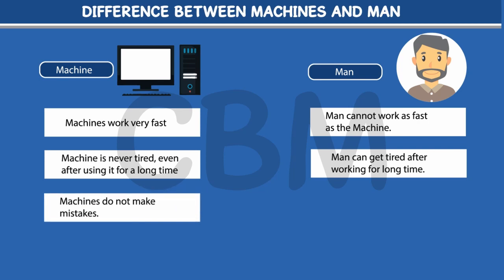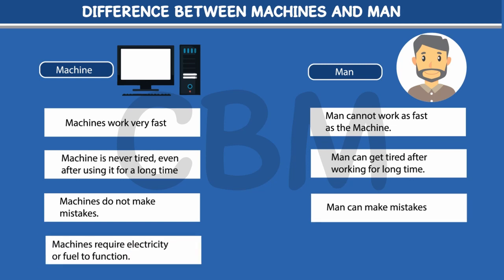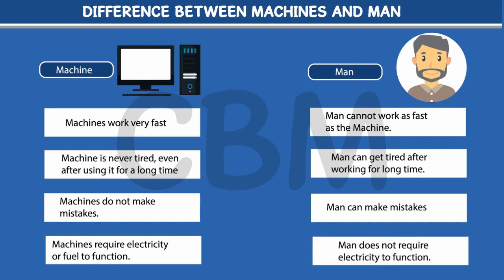Machine does not make mistakes. Man can make mistakes. Machine requires electricity or fuel to function. Man does not require electricity to function.